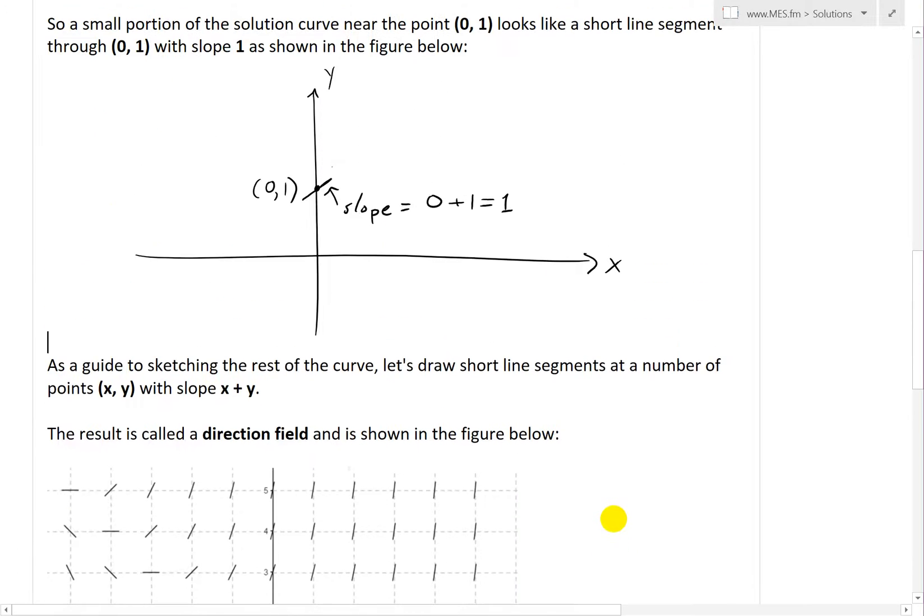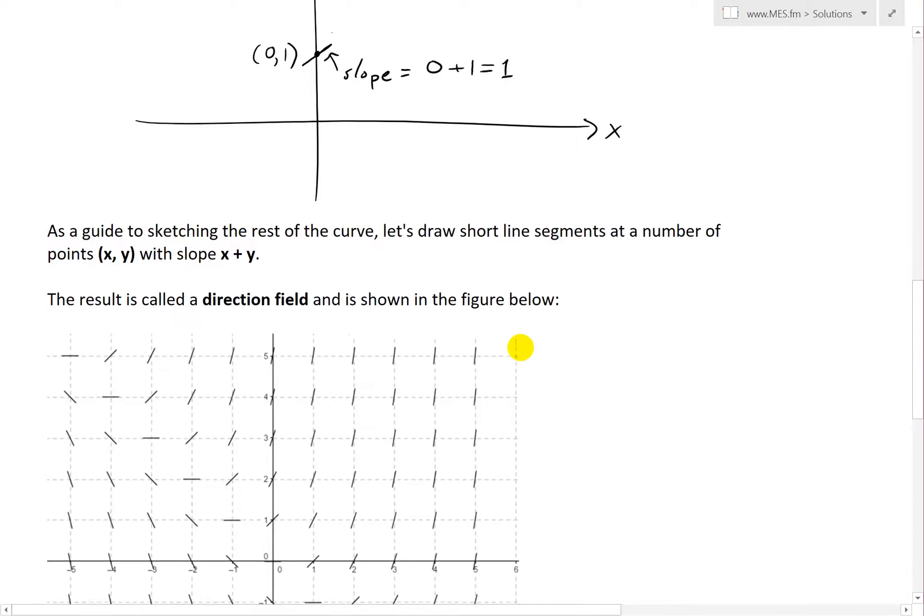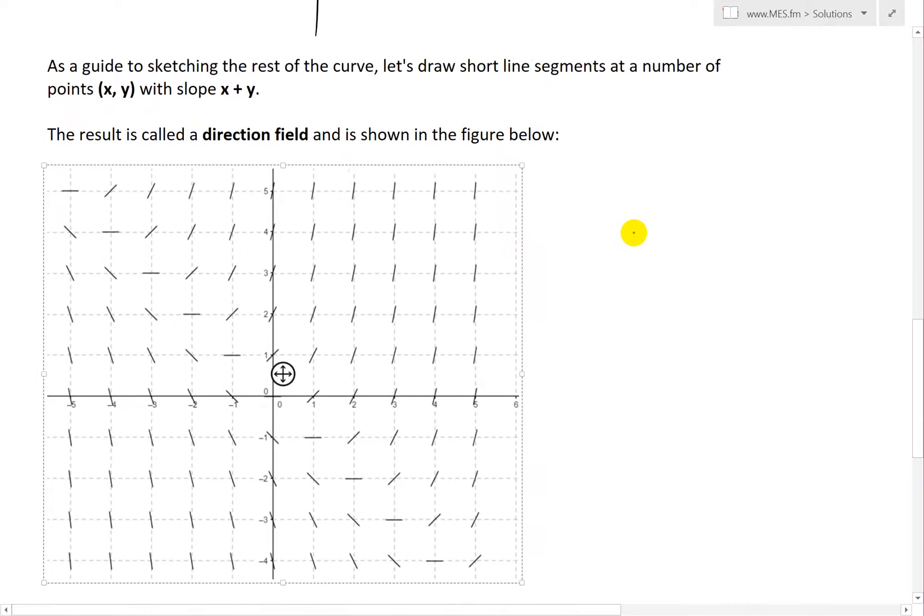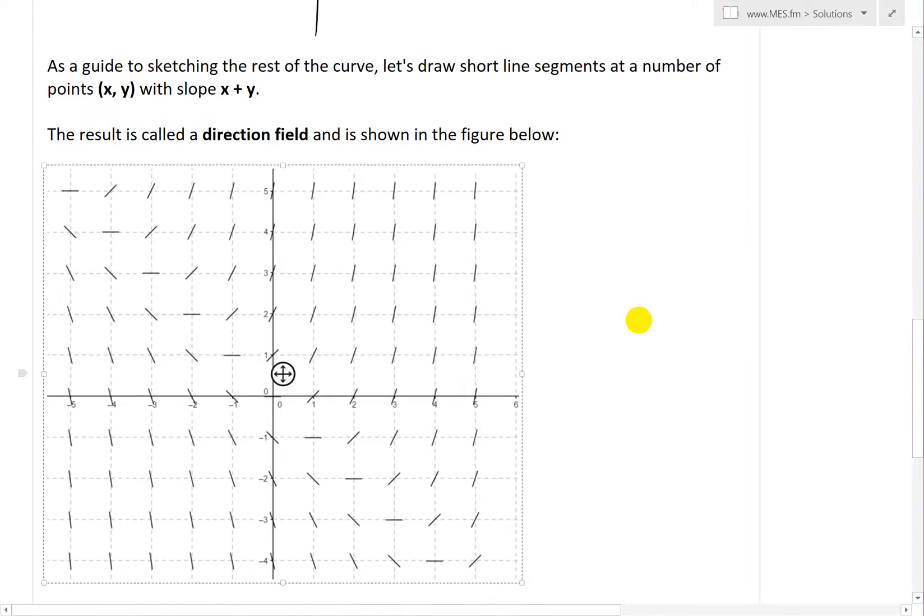So now if we extend this further and look as a guide to sketching the rest of the curve, what we could do is draw short line segments at a number of points (x, y), and they all have slopes x + y. The result of this, when you do this for a lot of points, is called the direction field, and it's shown in the figure below.